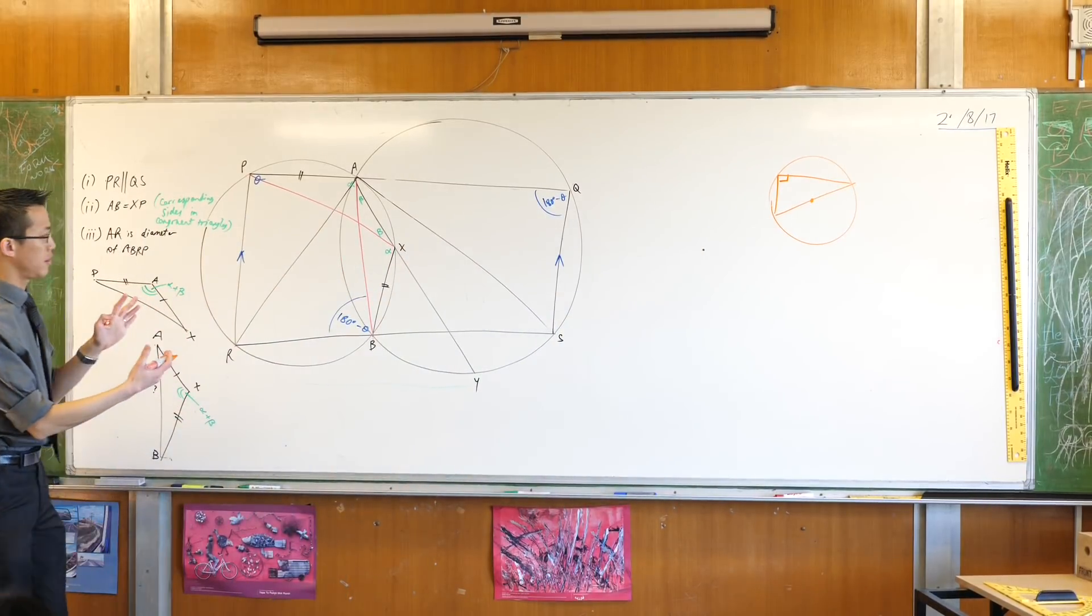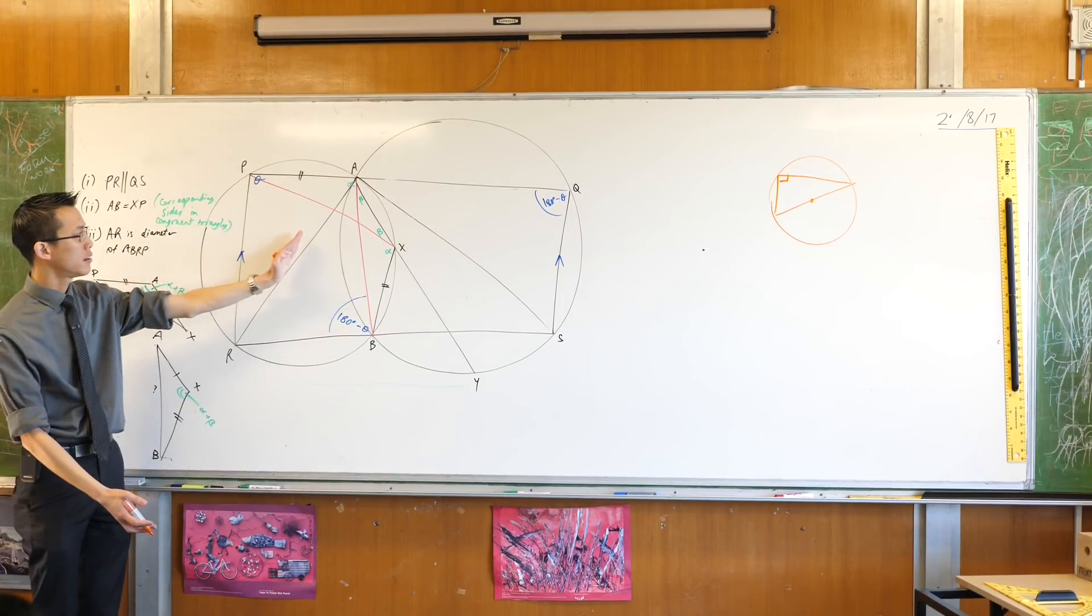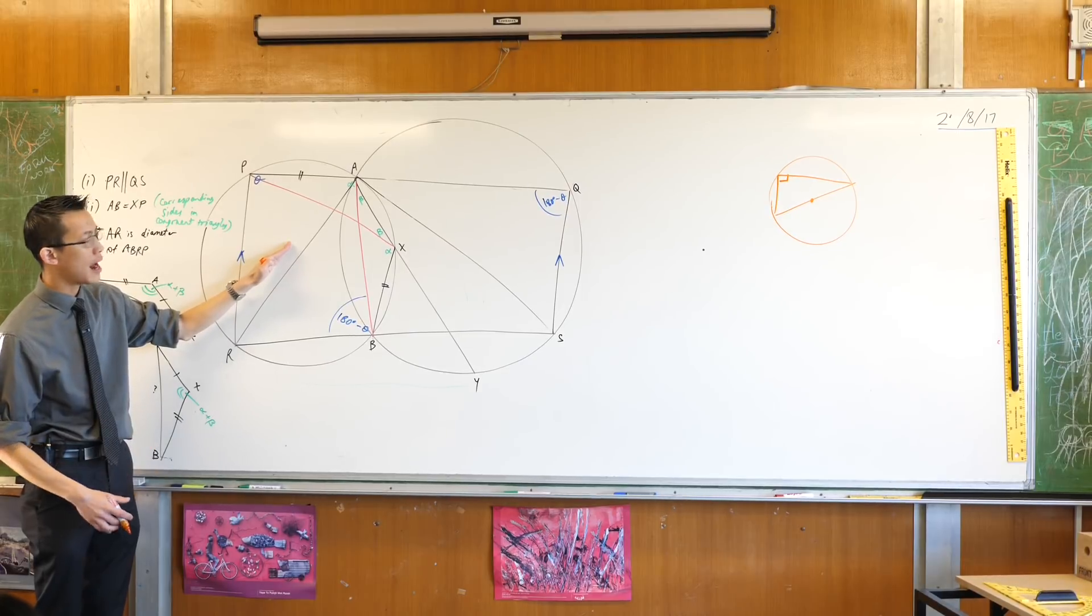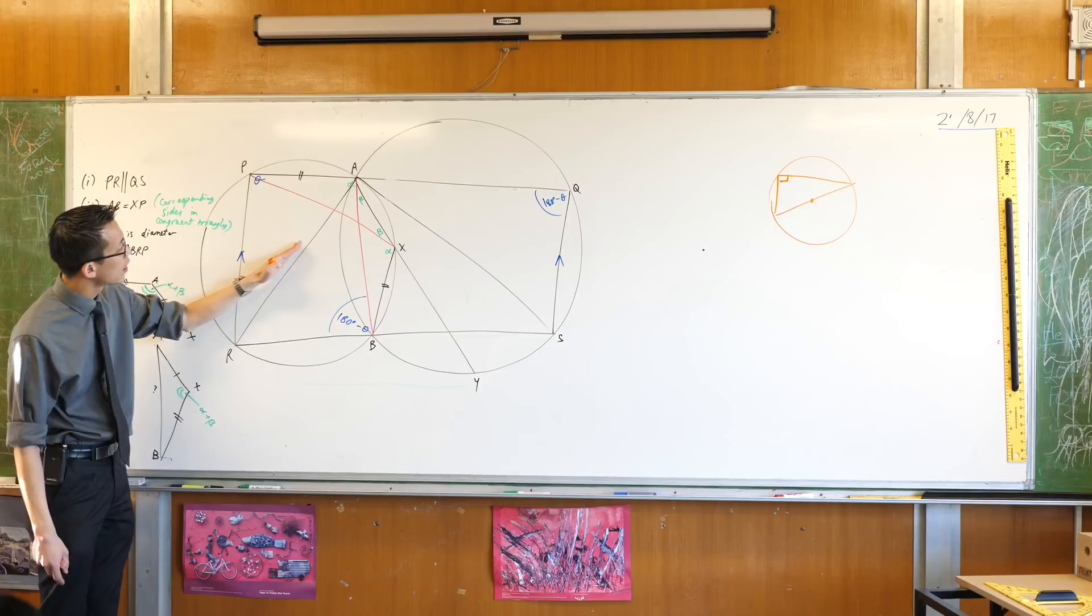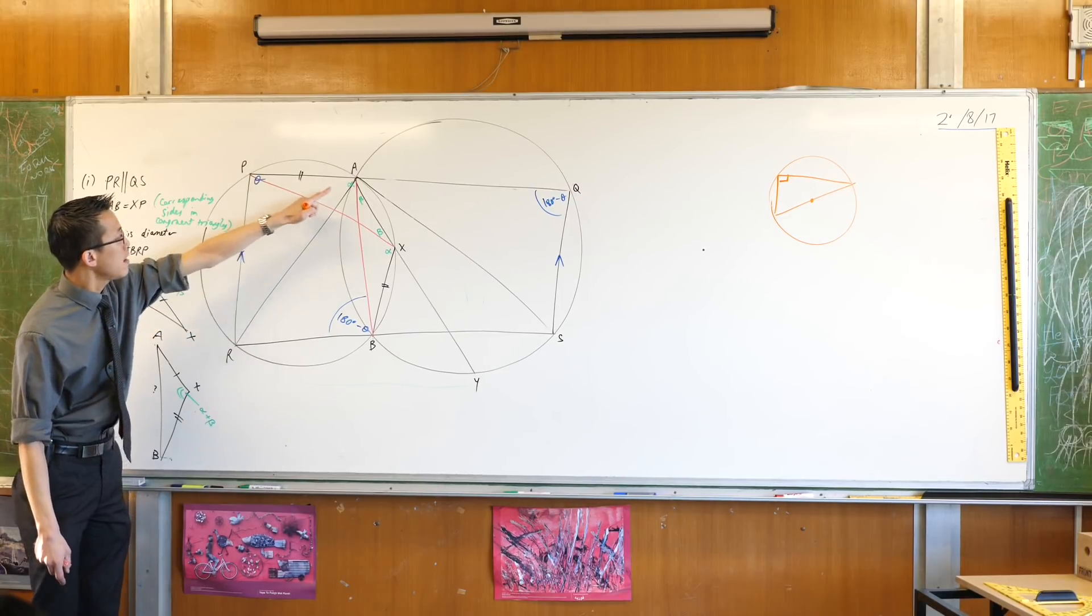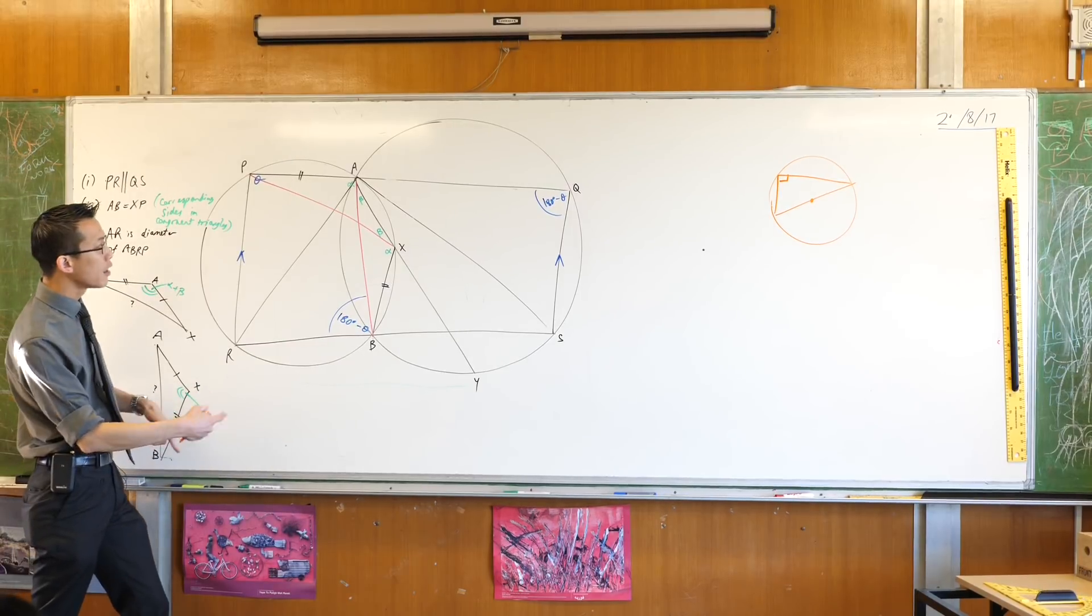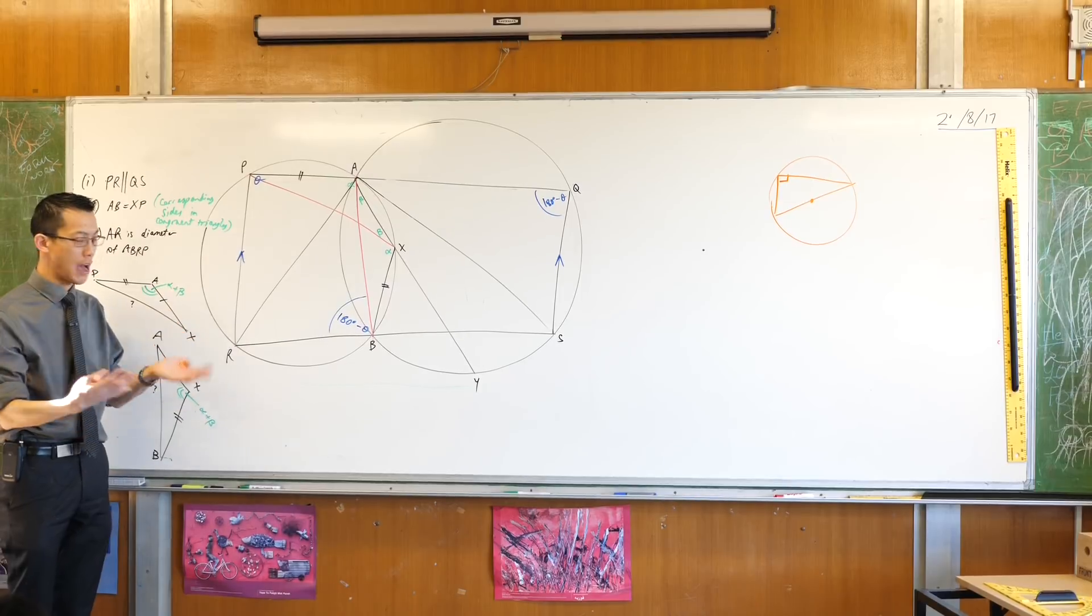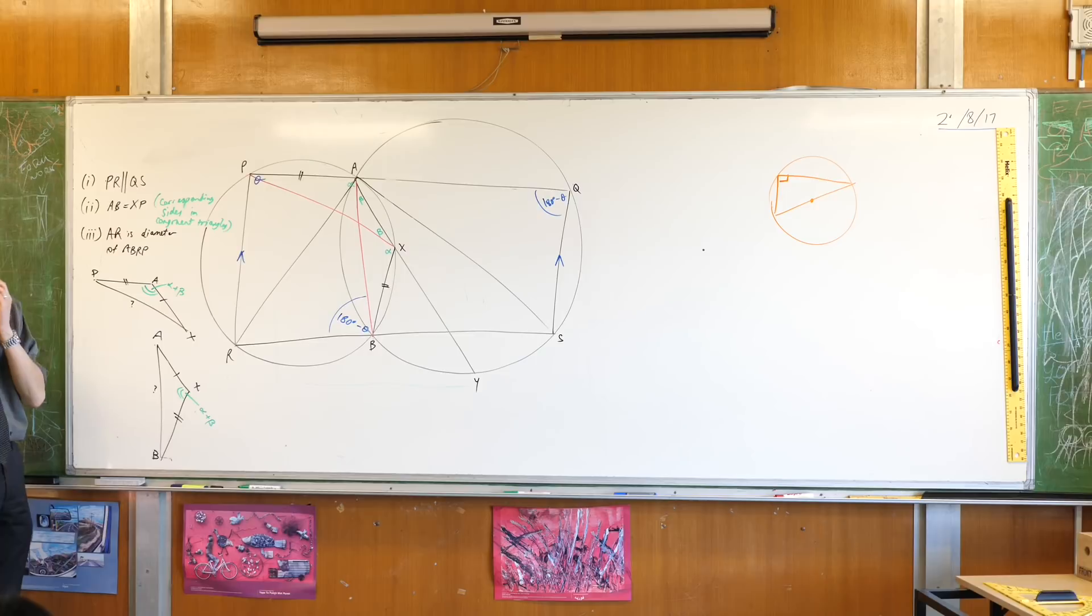Now, if you come over to our circle, AR is here. So if it is a diameter, which angles are the angles in a semicircle? There's actually more than one. Have a look. APR is one of them. Okay. And the other one is ABR. Both of them, if we're right, should be equal to 90 degrees.